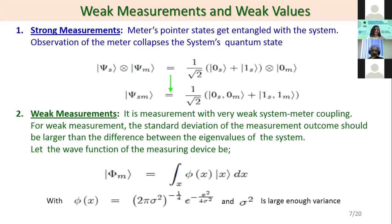In strong measurement, when we take a measurement, we have a meter and a system. When we take a strong measurement, the meter gets entangled with the system. The system state and the measurement state become entangled.